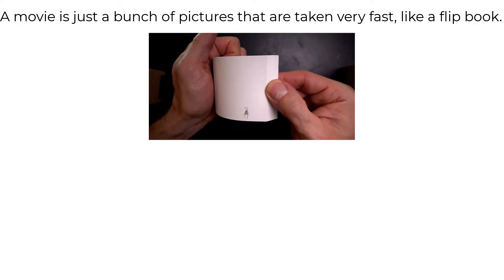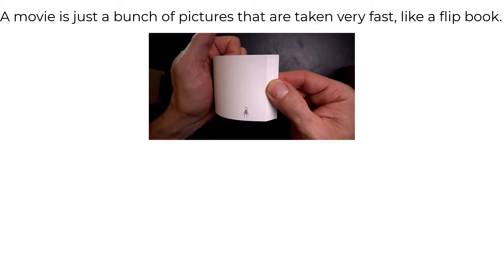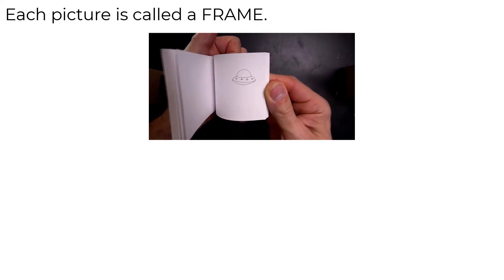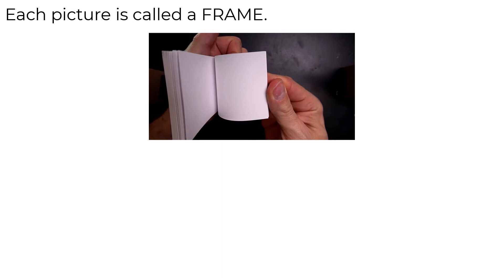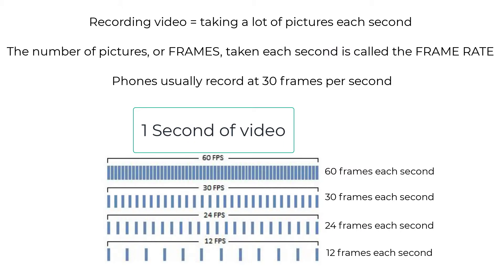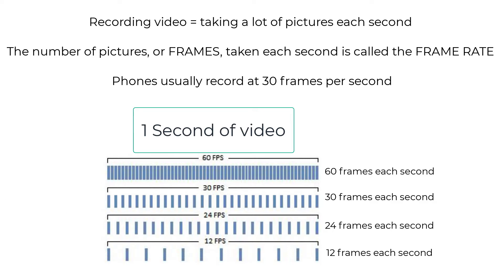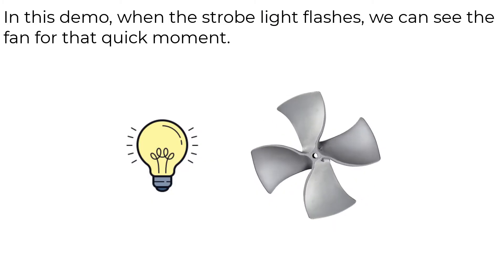A movie is basically a bunch of pictures taken really fast, kind of like a flip book, and each of those pictures we refer to as a frame. So each frame of a movie is a picture. Different things record at different frame rates — your phone typically records at 30 frames per second, which means that every second it takes 30 pictures.